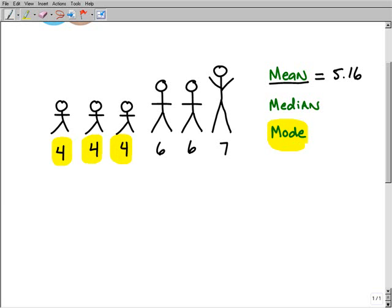Now sometimes there isn't a number that shows up most frequently, so in that case there wouldn't be any mode. But here, our mode is four. All right, so that's pretty easy. Now let's go ahead and talk about the median.